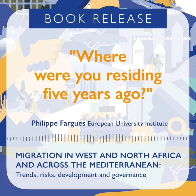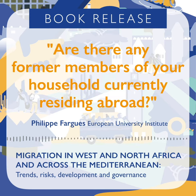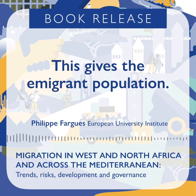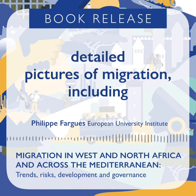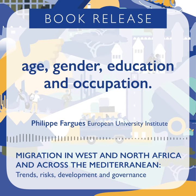The second question is: where were you residing five years ago? This provides the number of recent immigrants. The third is: are there any former members of your household currently residing abroad? This gives the emigrant population. Together, these three questions can deliver a detailed picture of migration, including place of residence, country of origin or destination for immigrants, age, gender, education, and occupation.